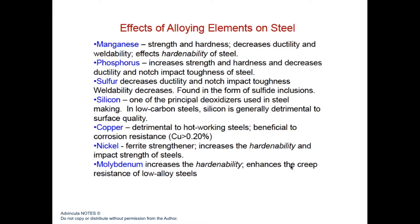Here is a summary of what each alloying element brings. Manganese increases strength and hardness but decreases ductility and weldability. Phosphorus increases strength and hardness. Sulfur decreases ductility and notch impact toughness. Silicon is a deoxidizer used in steelmaking. Copper is an important alloying ingredient, though detrimental to hot-working steels; at a minimum of 0.2%, it is essential to resisting corrosion. Nickel is a ferrite strengthener that increases hardenability, impact strength, and contributes to corrosion resistance. Molybdenum increases hardenability and enhances creep resistance of low alloy steels.